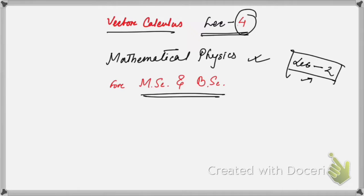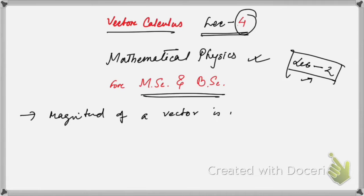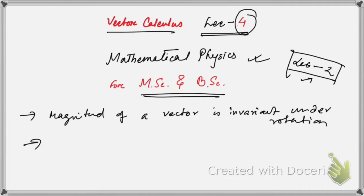We are going to discuss that the magnitude of a vector is invariant under rotation. The next property we are going to discuss is that the dot product of two vectors, a dot b, is also invariant under rotation.